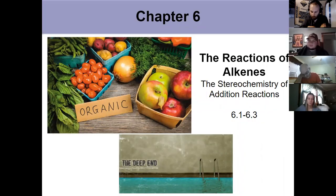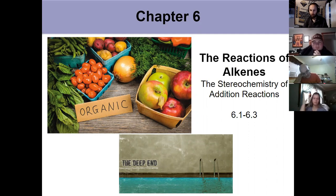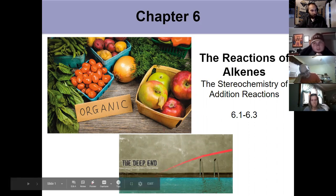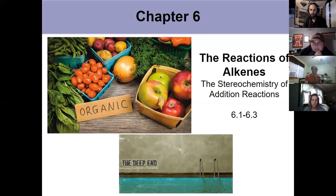Chapter six is where we get into, as we alluded to in chapter five, the reactions of alkenes. That's where we will spend our time for the first two-thirds to three-quarters of the chapter, and then we'll spend the last part talking about the stereochemistry of addition reactions. Just like with chapter four in general chemistry when we learned about balancing redox reactions by the half-reaction method, this is where we go into the deep end of organic chemistry.